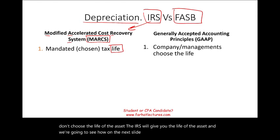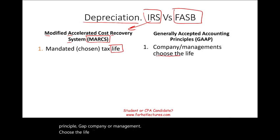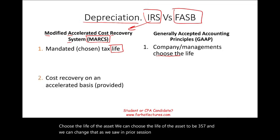Under Generally Accepted Accounting Principles, GAAP, company or management choose the life of the asset. We can choose the life of the asset to be 3, 5, 7, and we can change that, as we saw in prior sessions. That's the first difference.